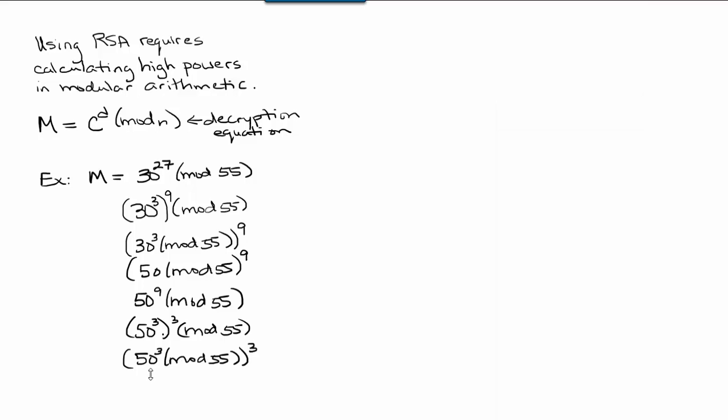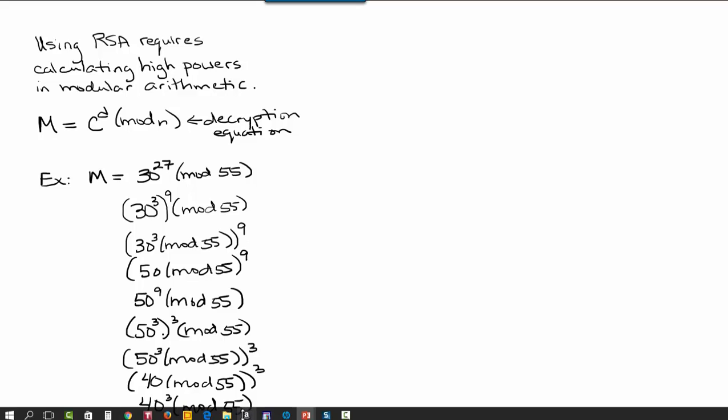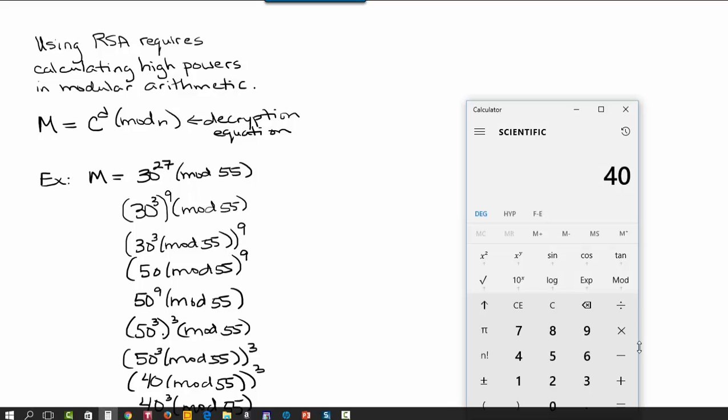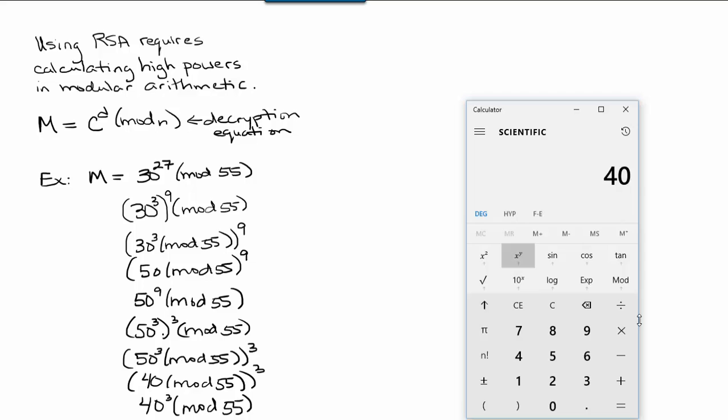So, this expression is equal to 40 mod 55 raised to the 3rd power, or 40 to the 3rd mod 55. So, slowly we're whittling this down to something that's more manageable. 40 to the 3rd can be calculated pretty easily. 40 to the 3rd is 64,000. We want to find that mod 55.